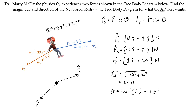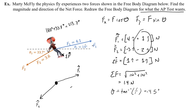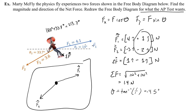Actually, I made a mistake — 1 plus negative 2 is negative 1, not positive 1. That doesn't affect the magnitude, only the direction: negative 45 degrees. So the net force is 1.4 newtons at negative 45 degrees. You could draw the net force on your working picture, but you are not allowed to draw it on the free body diagram for the AP test — they like to take points off for that. Alright, that's the end of this video. Goodbye.